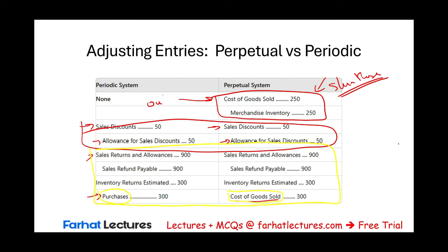We also close Purchase Discount, which initially had a credit balance. To close it, we debit Purchase Discount and credit income summary. You could close it first to cost of goods sold, then credit cost of goods sold and debit income summary — but I'm going to close it directly to income summary. I want you to see that Purchase Discount is a cost of goods sold account, which is a temporary account that eventually closes to income summary.